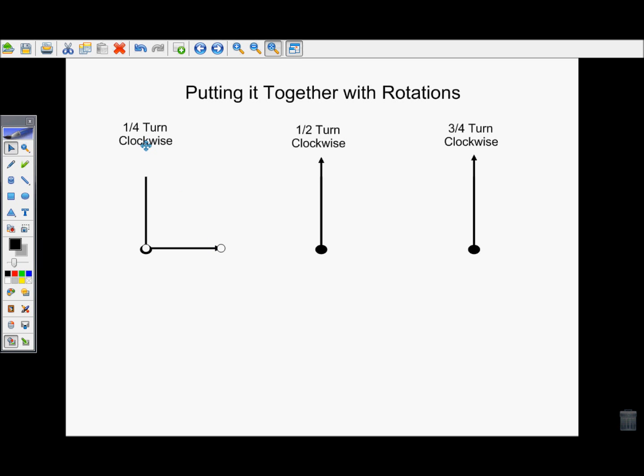Now we know that we did a quarter turn clockwise, but we need to prove it to other people as well, that we went clockwise. That we went around this side, and not all the way around this side. To do that, we're going to draw that curved arrow on the inside, saying that we went from the 12 to the 3.